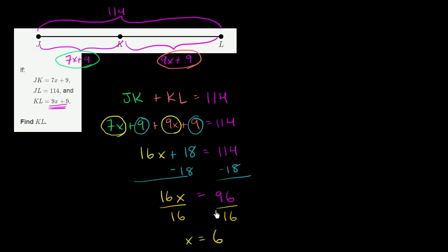Now we're not done yet. We're not looking just for x. We're looking for the length of KL. KL is 9x plus 9. Let me write that down. So KL is equal to 9x plus 9. They told us that right over there is equal to 9x plus 9. We just figured out that x is equal to 6. So this is equal to 9 times 6 plus 9. And this is equal to 9 times 6 is 54 plus 9 is equal to 63. So KL is equal to 63.